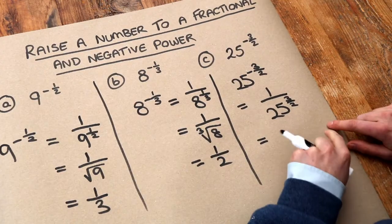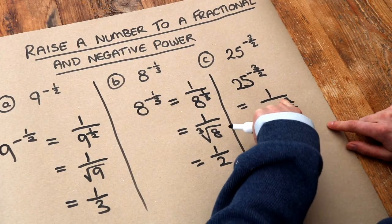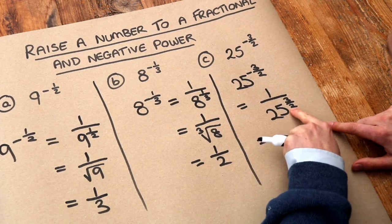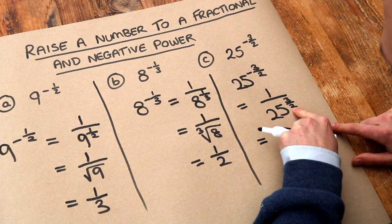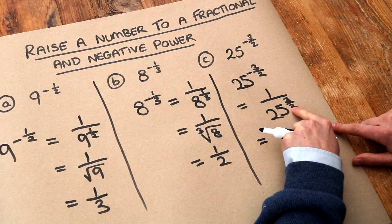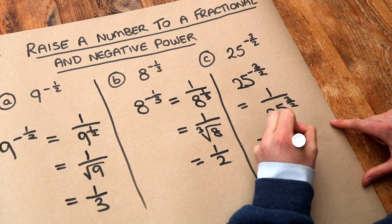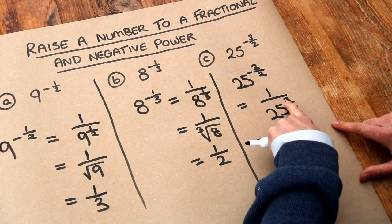And then, do you remember, when we have a fractional power where you've got something in the numerator and the denominator, and that numerator is not just 1, then we deal with the denominator first. So because the denominator is 2 in this fractional power, we do the square root of 25.